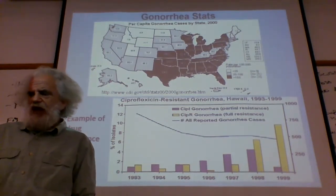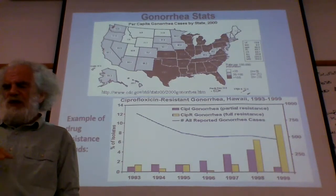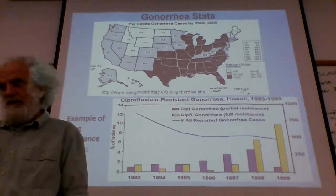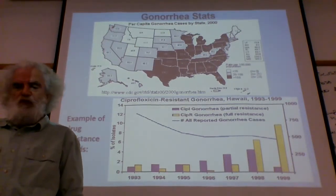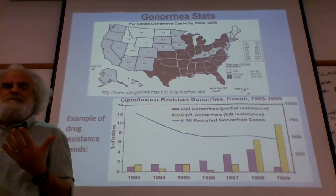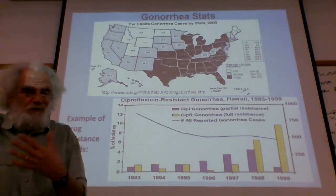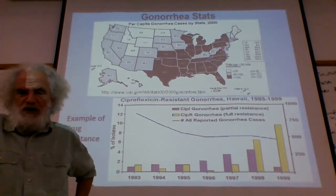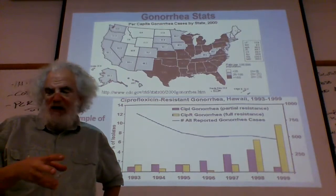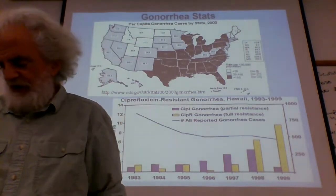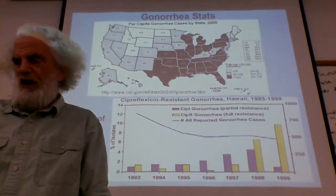There are standard antibiotics used for gonorrhea, and then there is partial resistance that requires a longer course. Some strains are completely resistant and require different antibiotics. The rise of fully antibiotic-resistant gonorrhea is absolutely starting to come up. This is an example of horizontal gene transfer of a plasmid, and over time mutations have allowed for survival of individuals that can maintain resistance to these different antibiotics — a standard pattern we'll see when looking at other antibiotic-resistant bacteria.